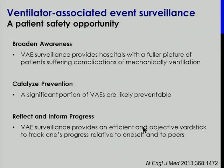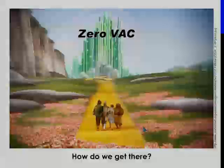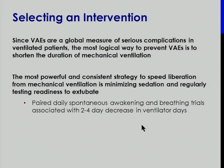Our group at CDC sat down and asked: how would you prevent a VAE? We reasoned that if a VAC is a global, nonspecific measure of a patient who simply got worse from a complication of critical care and mechanical ventilation, the best way to prevent these events is to get the patient off the ventilator and out of the ICU sooner. And we know the most powerful way to do that is spontaneous awakening trials and spontaneous breathing trials, particularly when coordinated together.